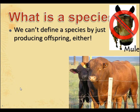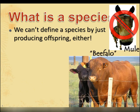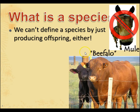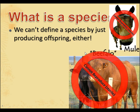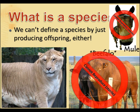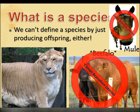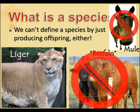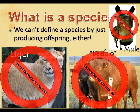What about this thing here? It looks a little bit like a buffalo, a little bit like a cow, but it's actually called a beefalo — a hybrid between domestic cattle and the American bison. But they can't reproduce on their own; they're sterile. And of course, we have the most famous of all: the liger. The liger is a hybrid between a male lion and a female tiger, which is different from a tigon. But ligers are not a new species because they can't reproduce — they are sterile.